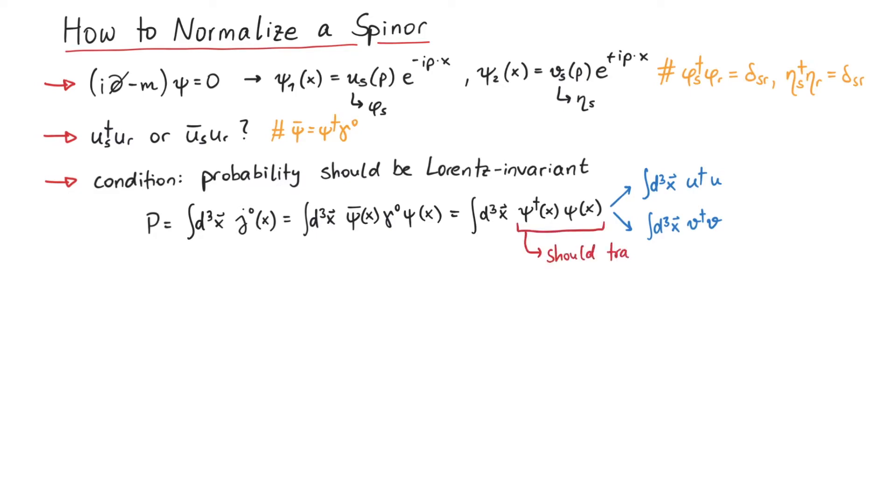What if psi dagger psi transformed like the zero-component of a four-vector? Then, similar as to how the dt makes d4x Lorentz invariant, d3x together with psi dagger psi will be Lorentz invariant.